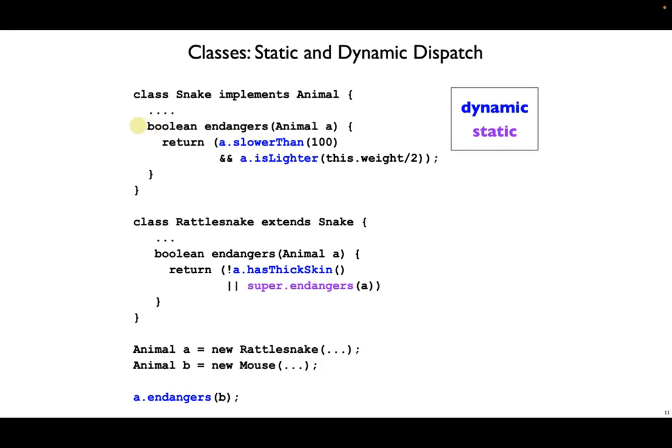Second, we have a class rattlesnake that extends snake. And inside rattlesnake, the endangers method can return true in two cases. First, if the animal does not have thick skin, then the rattlesnake's bite can poison it.